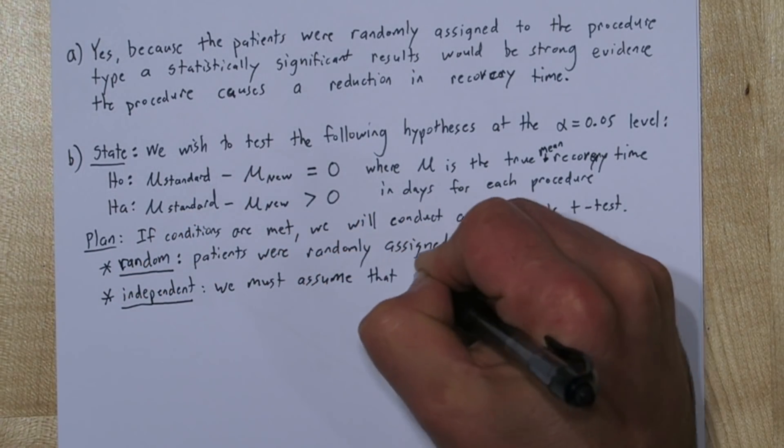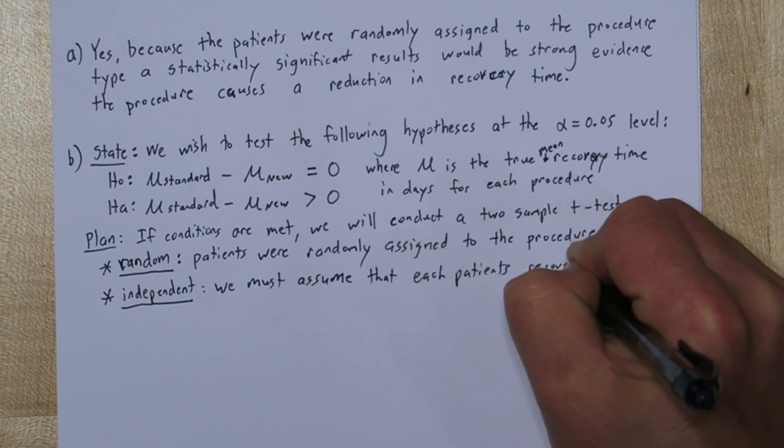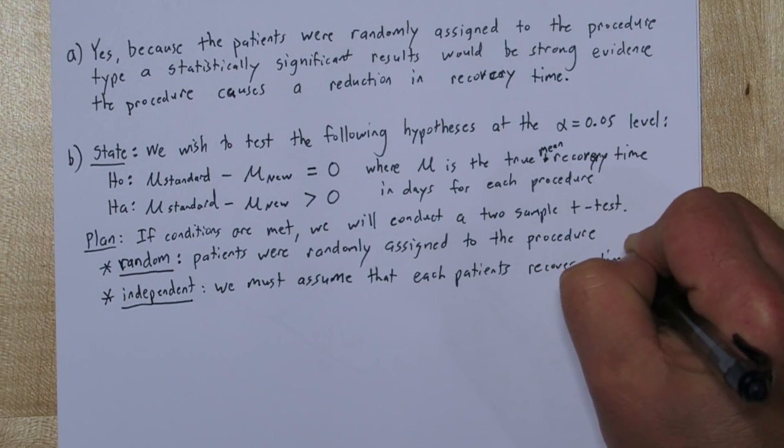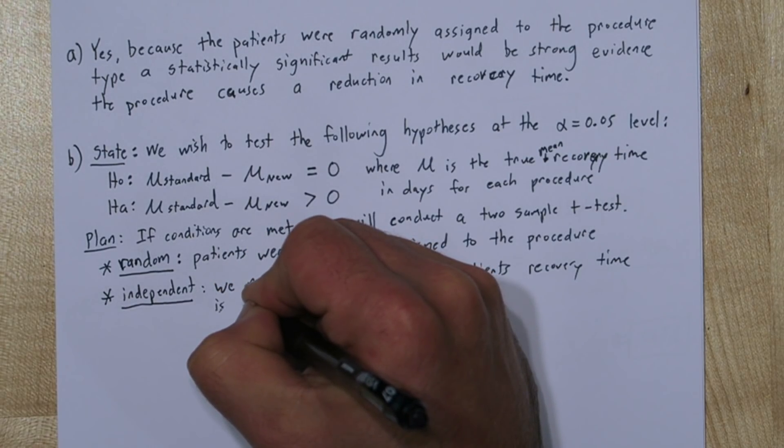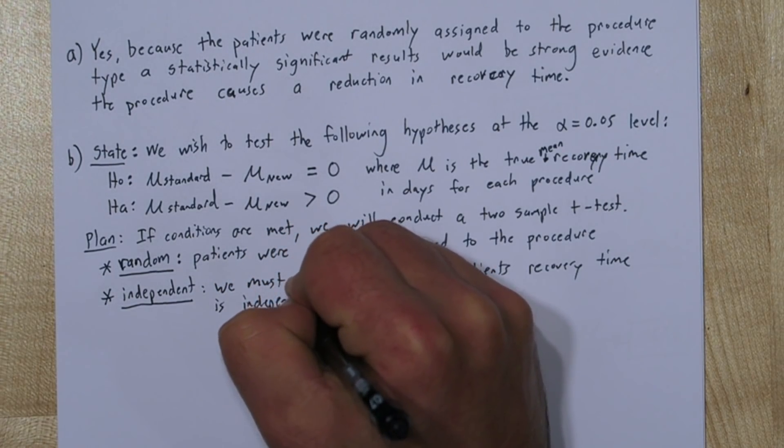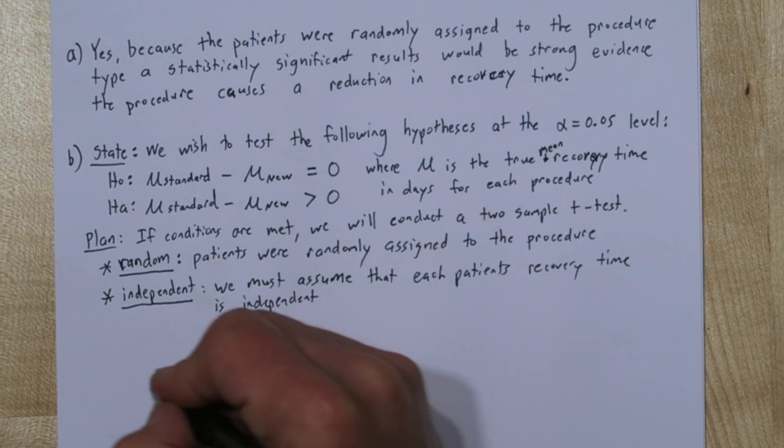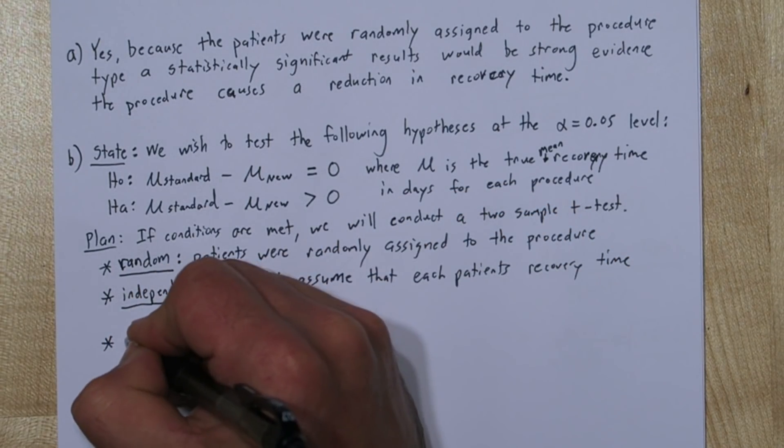The independent condition is always a little tricky, and lately the College Board's grading rubrics haven't really included much addressing the independent condition. So my best guess here is we must assume that each patient's recovery time is independent. But it might not be necessary to list that condition at all.